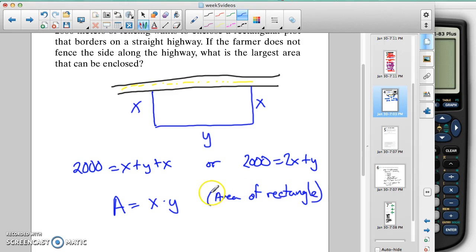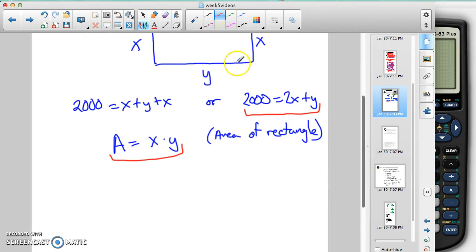So that means that we need to somehow write this equation with one variable. And to do that, what we're going to do is we're going to use this fact that we have this up here.